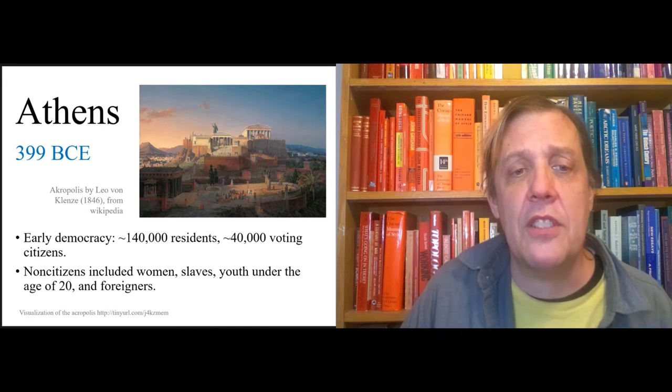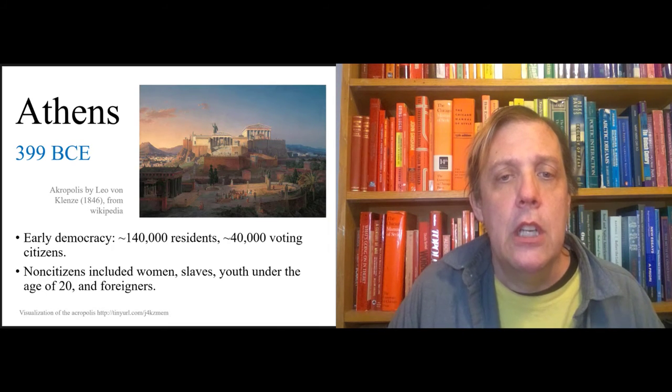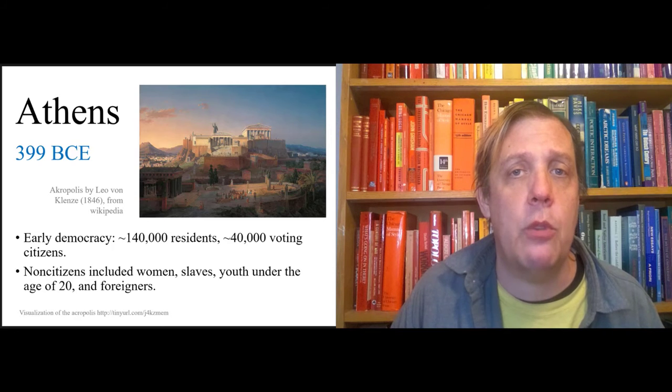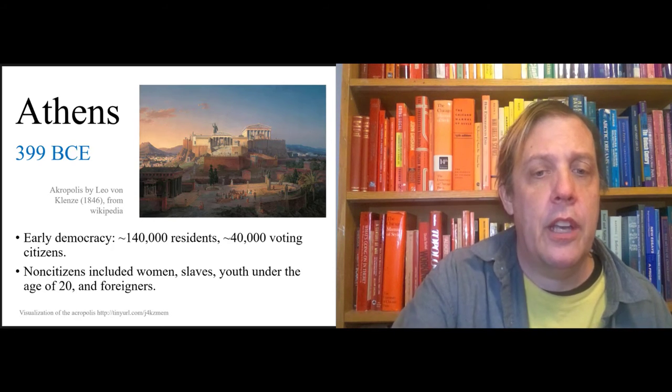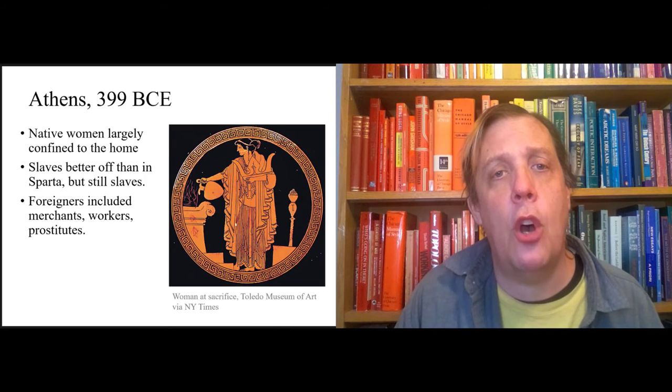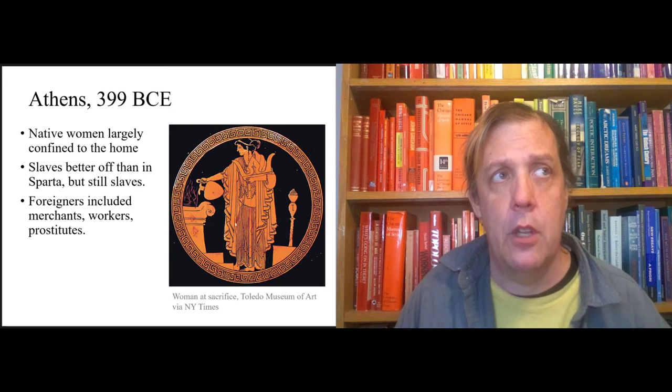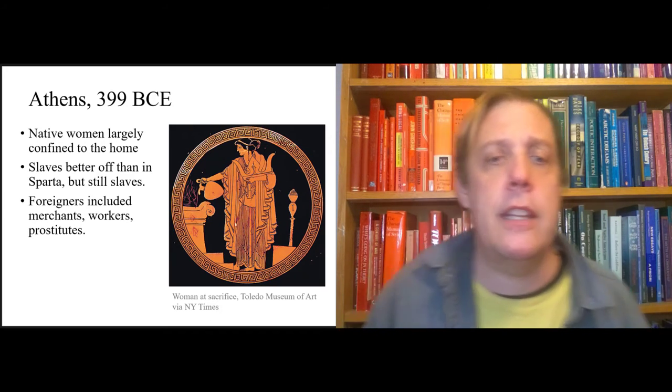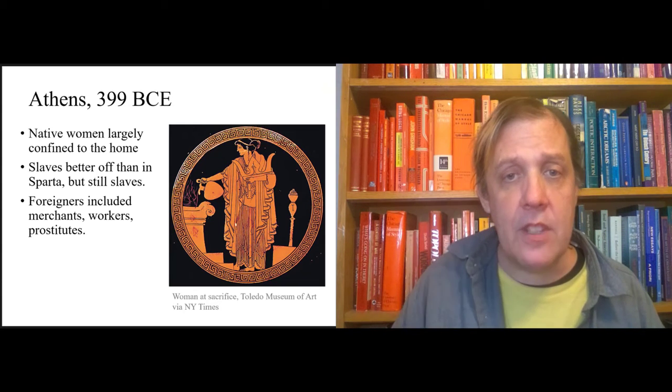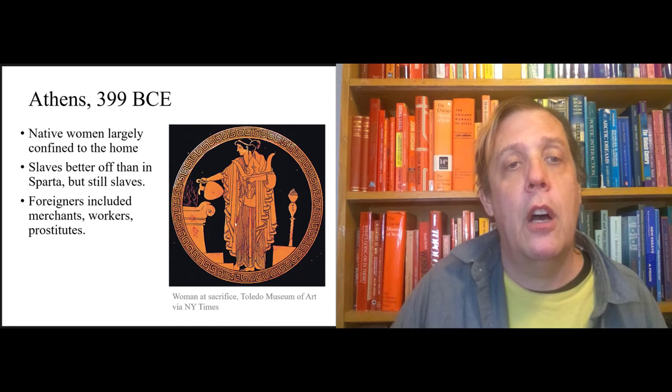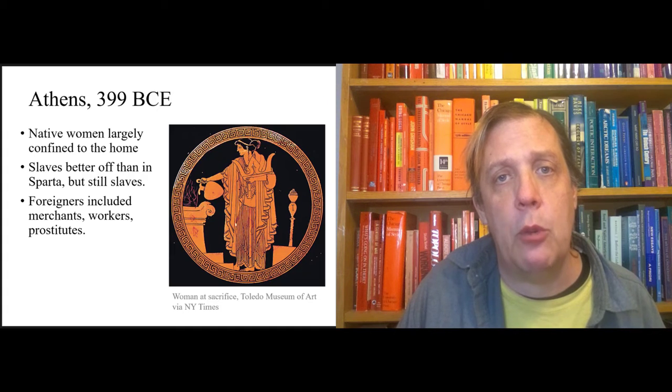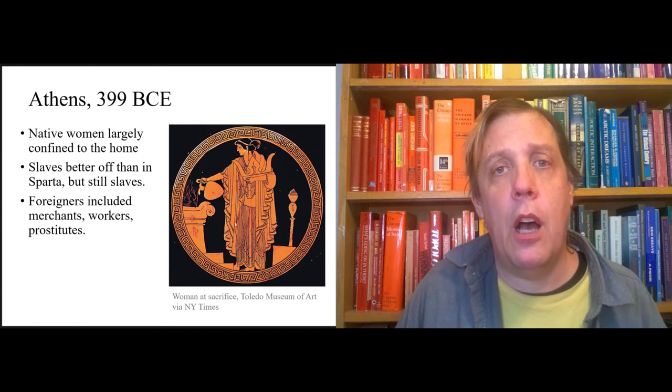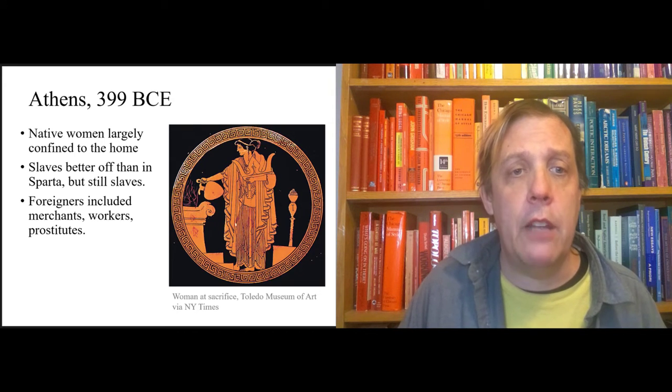Who were the non-citizens? Well, women, obviously. Slaves, youth under the age of 20, and foreigners. There was a large immigrant population in Athens because it was a mercantile city. Women were largely confined to the home, especially women who were Athenian. The chastity and purity of native women was highly prized and they were kept largely confined to the home. But there were plenty of other women who were in public, mostly slaves and foreigners.